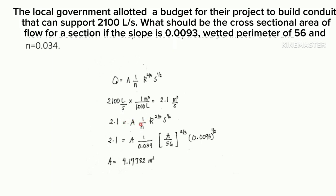The hydraulic radius is equal to area over the wetted perimeter. The wetted perimeter is given as 56 and the area is unknown, raised to two-thirds. And the slope is also given, 0.0093, raised to one-half. If you're going to find the area, you can use this formula.